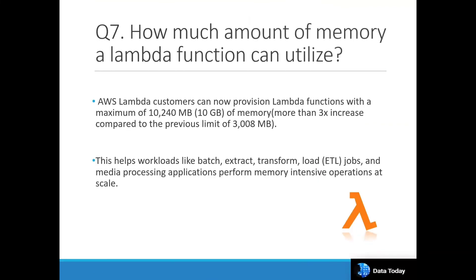Another important question is: how much memory can a Lambda function utilize? As previously noted, Lambda used to work on a small amount of memory, but in December 2020 AWS updated this so Lambda customers can now provision a Lambda function with a maximum of 10 GB. Earlier it was 3008 MB only, so now it's about three times more. This helps workloads like batch ETL — extract, transform, load — and media processing applications to perform memory-intensive operations at various scales.